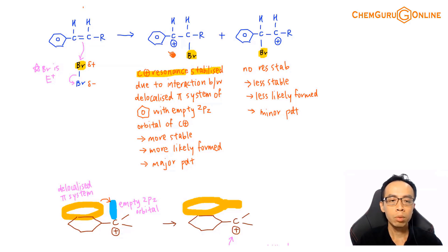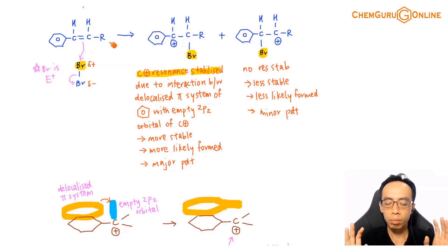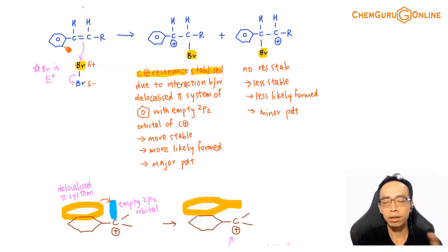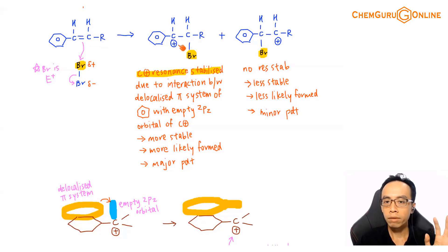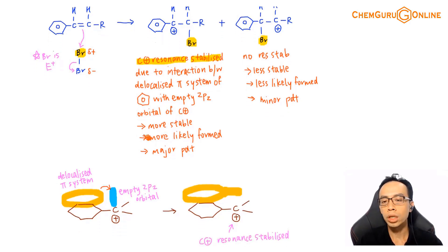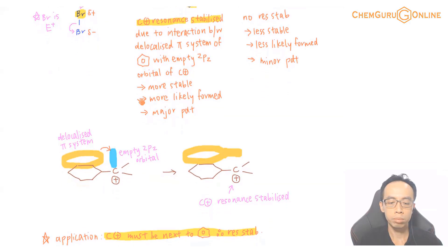This is the reason why when Markovnikov is totally useless — where both alkene carbons have the same number of hydrogens — the question is obliged to give you one carbon attached to benzene. It cannot be both normal R groups, because then we cannot tell which carbocation is more stable. Knowing that the C⁺ next to benzene is the major carbocation, the OH group will then join to this C⁺, and we can deduce the major product.